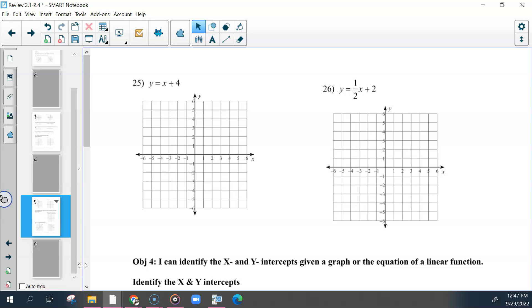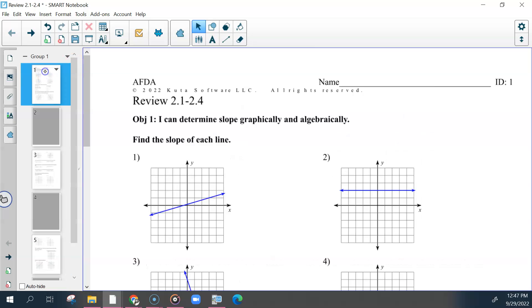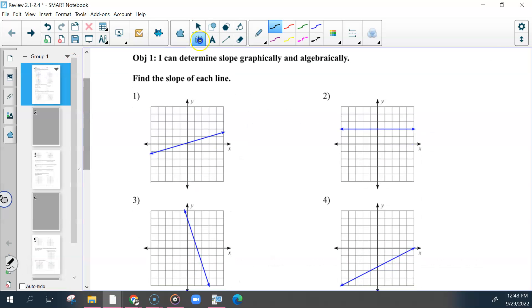I'm going to go over 2. Starting with number 2, this is your objective on slope. This is a horizontal line. So anytime you see or are talking about horizontal or vertical line, write your HoVeBuzz. If this is a horizontal line going left and right, what is your slope? 0. So m equals 0 would be our answer there.